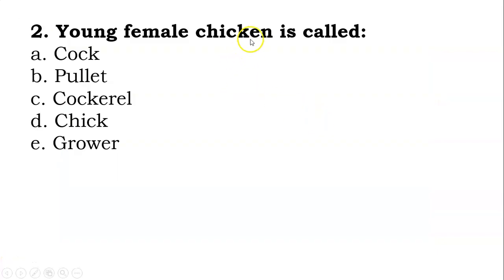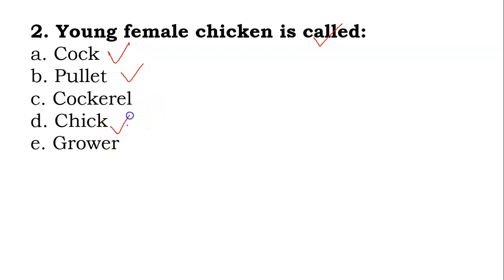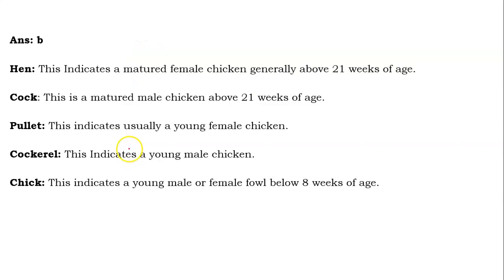The second question: young female chicken is also known as — Cock, Pullet, Cockerel, Chick, or Grower? Young female chicken is called Cock, Pullet, Cockerel, Chick, or Grower. Its answer will be B.